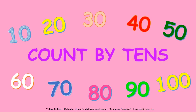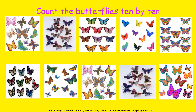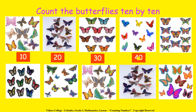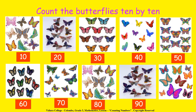Next, we are going to learn how to count by 10s. Counting numbers 10 by 10 is very easy. Count the butterflies 10 by 10. In one group, there are 10 butterflies. Let's count: 10, 20, 30, 40, 50, 60, 70, 80, 90, 100.